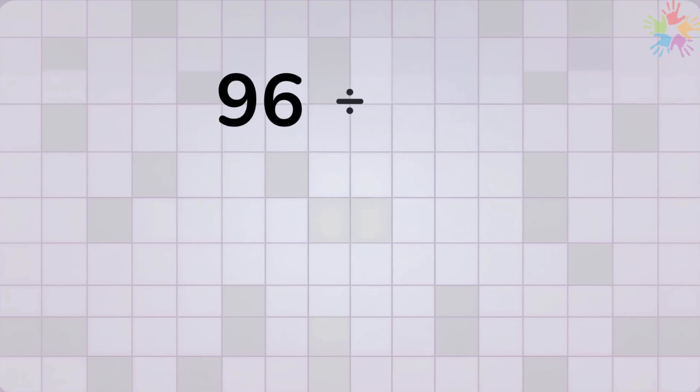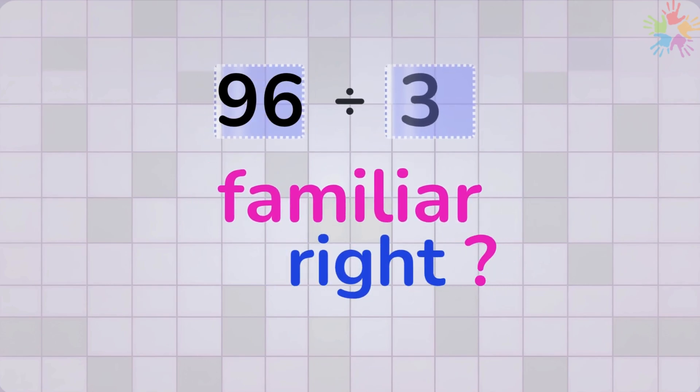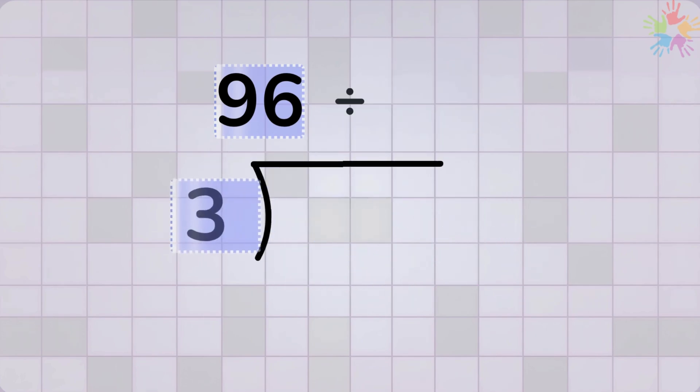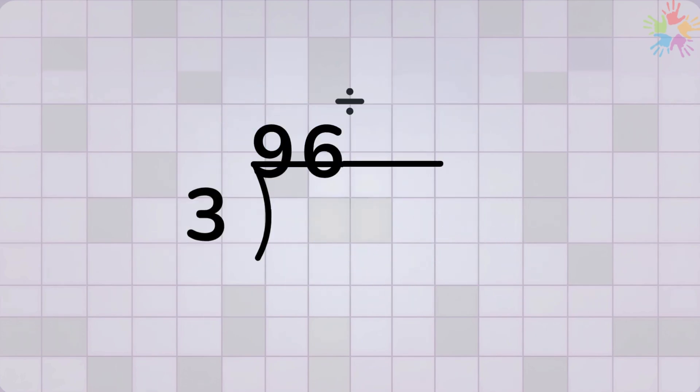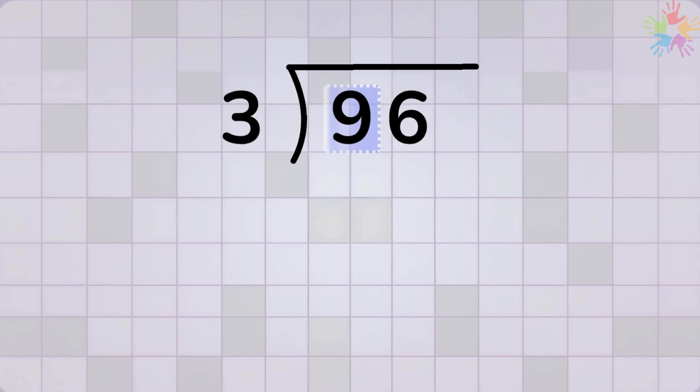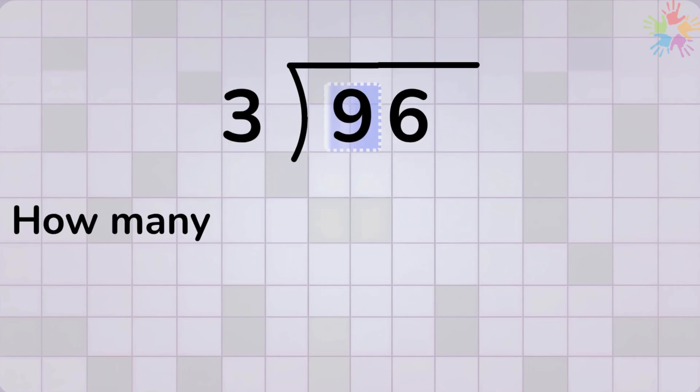Here is another one. We want to divide 96 by 3. This one look familiar, right? Place the number 3 outside and 96 inside. Start with the first digit 9. Ask, how many times does 3 go into 9?